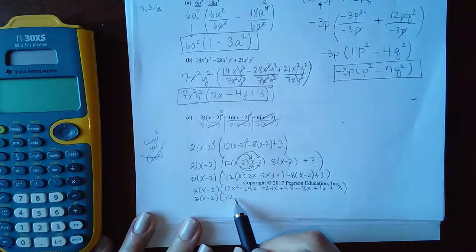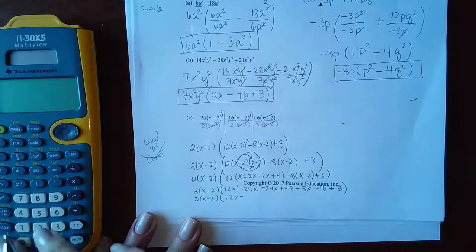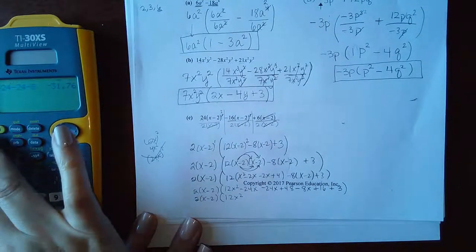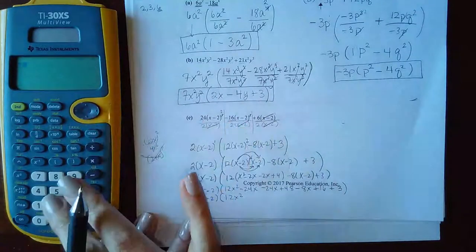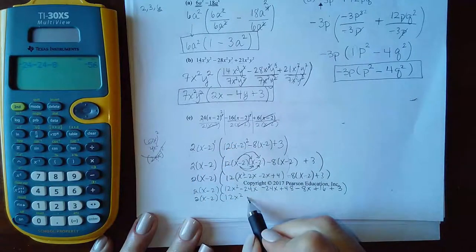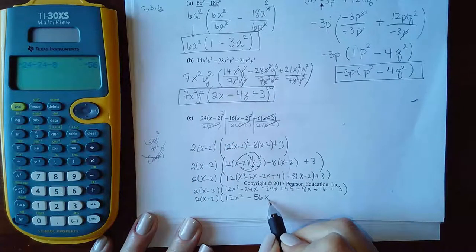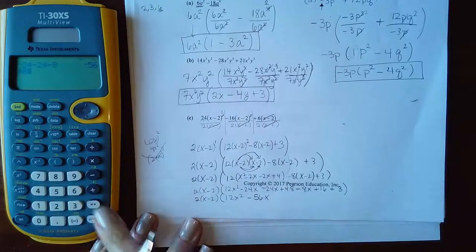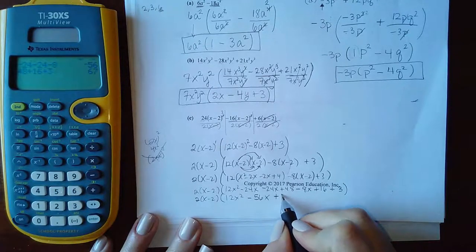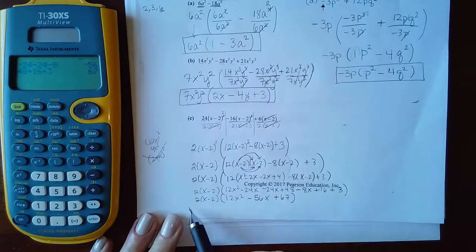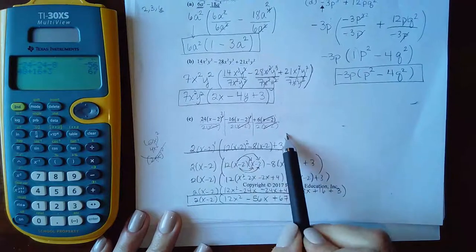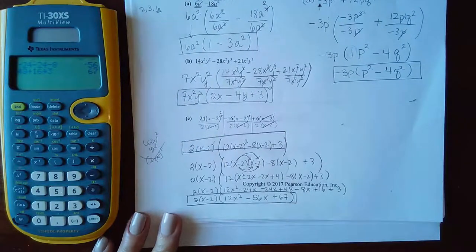So if I combine my like terms inside the parentheses, I have 12X². Let's see. Negative 24 minus 24 minus 8. I get negative 56X. And then if I have 48 plus 16 plus 3, I get a positive 67. And so this may be what they want.